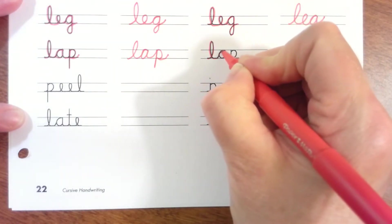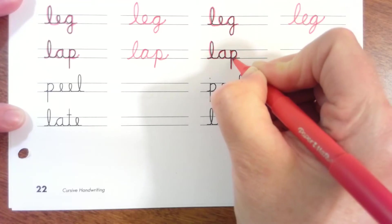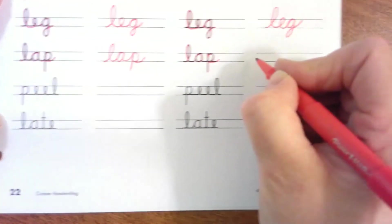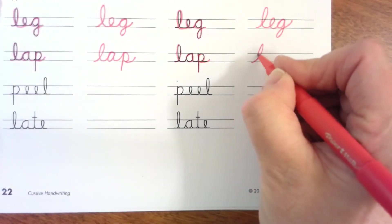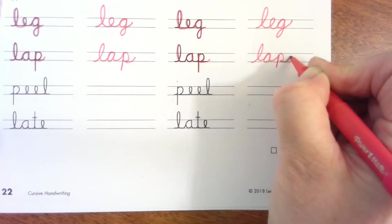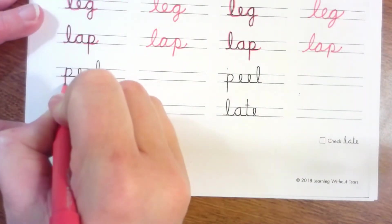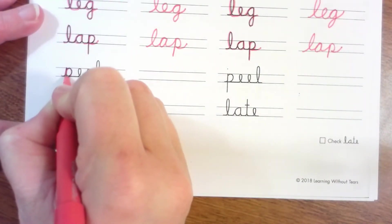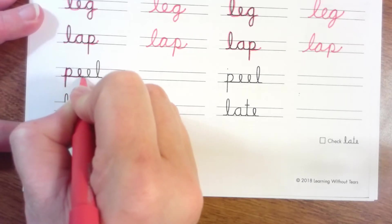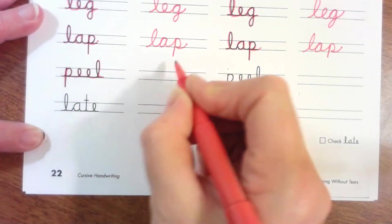Lap is called lap. Start at the dot, travel up, bump, travel away, magic C, bump, travel away, straight down, straight down, straight back up, curl around and travel away. Nice work, kiss your brain. Peel, travel up, bump, travel down, all the way up, curl around, travel away, loop around, loop around, all the way up, back down, peel.